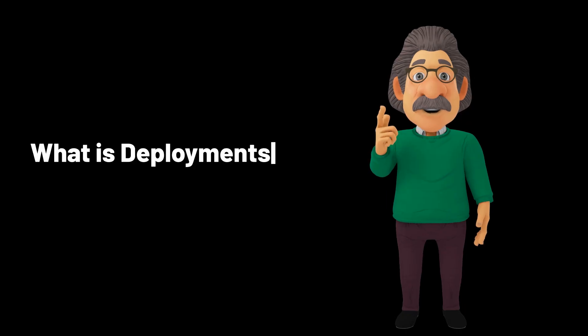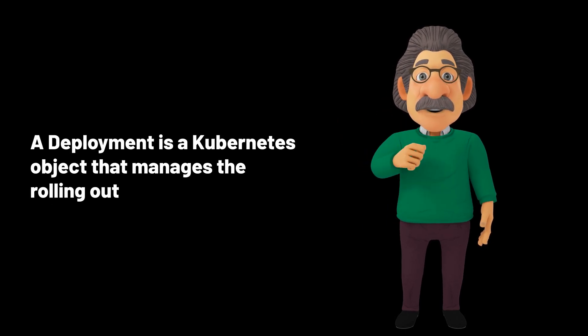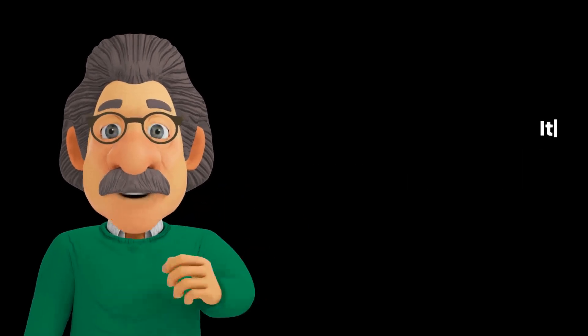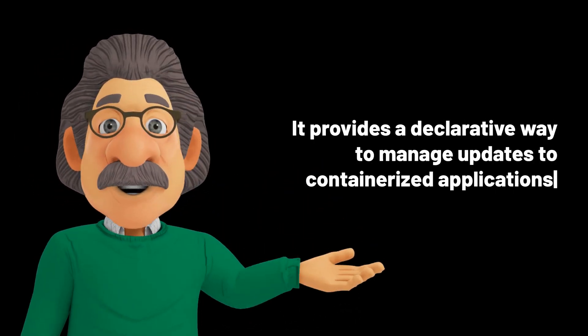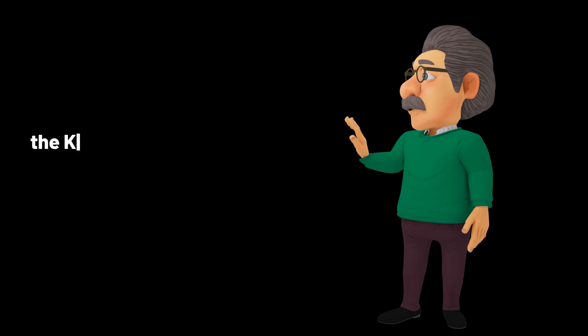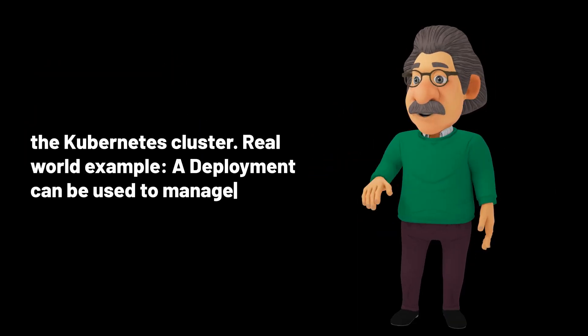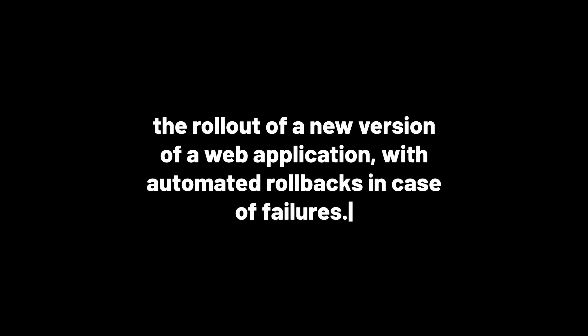What are deployments in Kubernetes? A deployment is a Kubernetes object that manages the rolling out and rolling back of changes to the state of the cluster. It provides a declarative way to manage updates to containerized applications running in the Kubernetes cluster. Real-world example: a deployment can be used to manage the rollout of a new version of a web application, with automated rollbacks in case of failures.